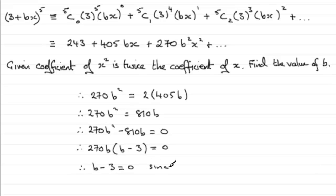Since b is a non-zero constant, it can't equal 0. So therefore, if we add 3 to both sides, we end up with b equaling 3.